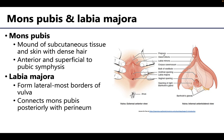Let's start with the mons pubis. This is going to be the mound of skin as well as, very importantly, the subcutaneous tissue, which varies in terms of the amount of adipose due to various factors but in particular age. This is going to be located superficial to the pubic symphysis, so it's going to be more anteriorly placed.